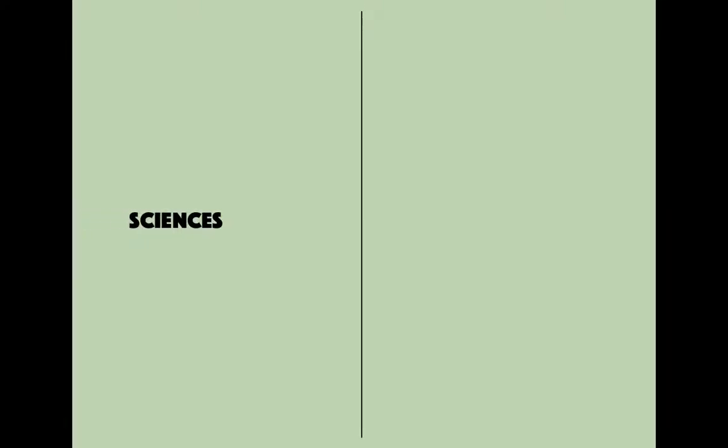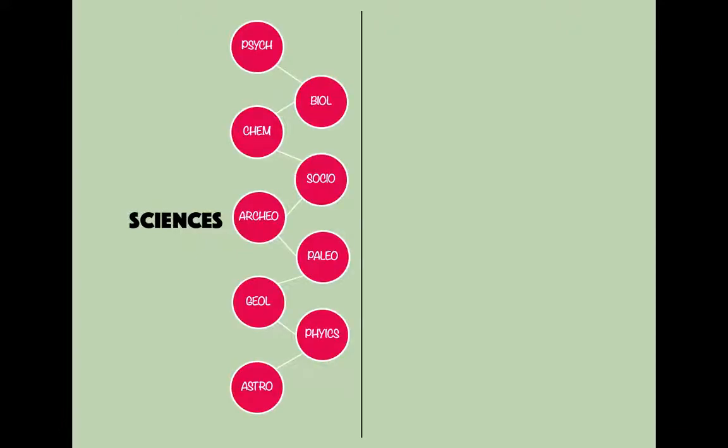You all know about science, right? There are lots of different science fields — like psychology, biology, chemistry, sociology, archaeology, paleontology, geology, physics, astronomy, and more. Whether they're social sciences, hard sciences, natural sciences, life sciences, or physical sciences, they're all sciences, so we classify them all under the topic of science. Accounting is kind of the same way.